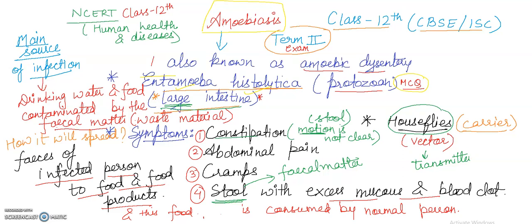The main source of infection is contaminated water and food — contaminated by fecal matter. If a person is suffering from amoebiasis, the feces discharged from their body can contaminate food and food products. When a normal person consumes that contaminated food, they may suffer from this protozoal disease known as amoebiasis. So constipation, abdominal pain, cramps, and stool with excess mucus and blood clots are the dangerous symptoms.